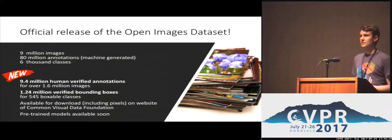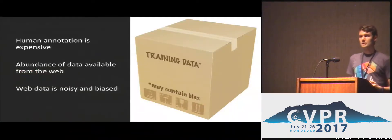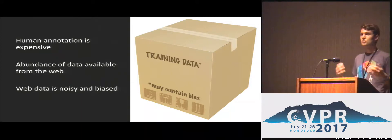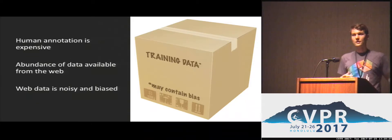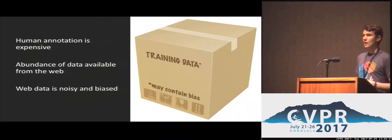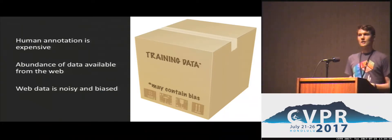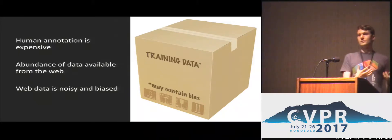The task at hand is to train image recognition systems for a very large vocabulary. The problem is that getting training data for this kind of task requires human annotation, which is very expensive and doesn't scale well with the number of concepts we want to recognize. However, there is an abundance of data available for our task, for example on the web — though this data comes with noisy annotations and usually contains unwanted bias, which might be exaggerated if used as training data.